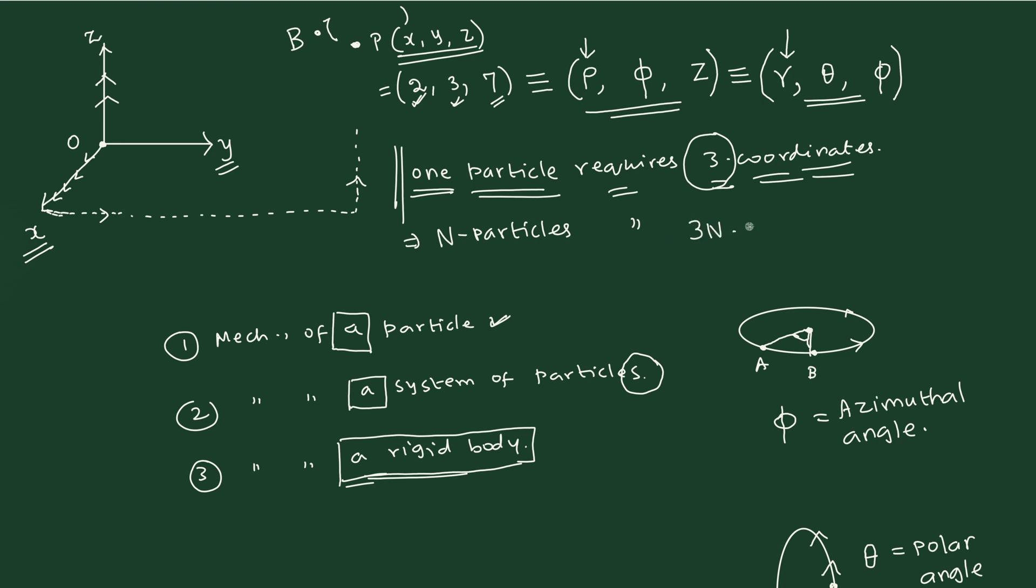We need three n number of coordinates, and the n number of particles together is called one system. So the n particle system requires three n number of coordinates. This is the first information about the generalized coordinates.